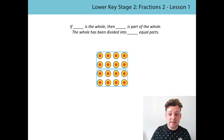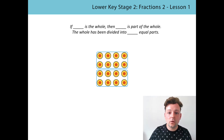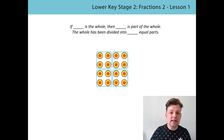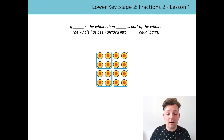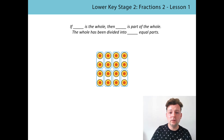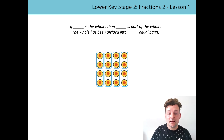This time I have got 16 cakes. If 16 cakes is the whole, then one group of eight is part of the whole. The whole is being divided into two equal parts. This time I still have 16 cakes — the whole is the same. If 16 cakes is the whole, then one group of four is part of the whole. The whole is being divided into four equal parts. This time I still have 16 cakes. So if 16 cakes is the whole, then two is part of the whole. The whole is being divided into eight equal parts.